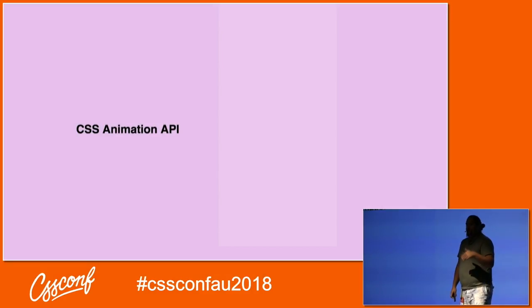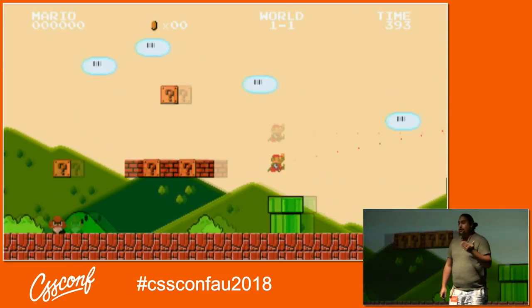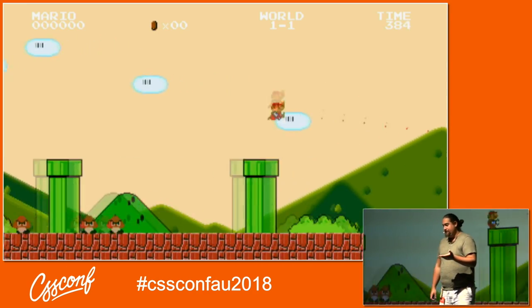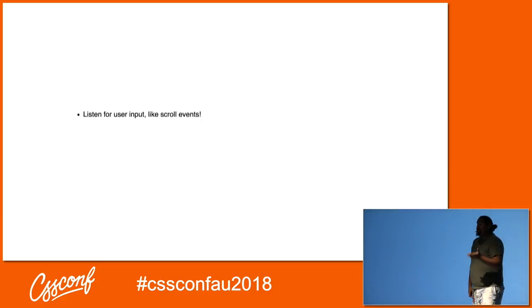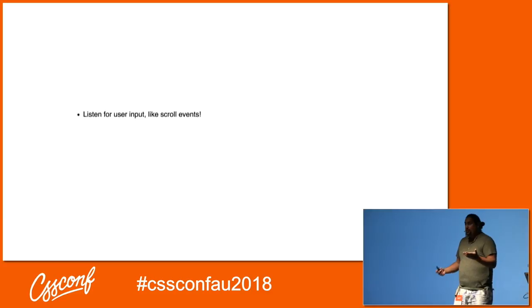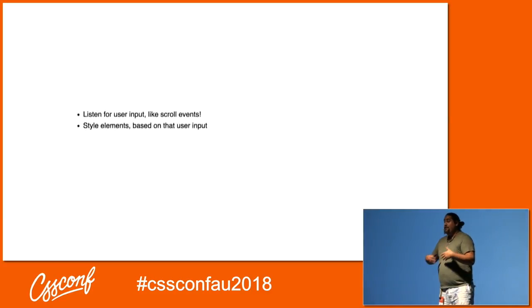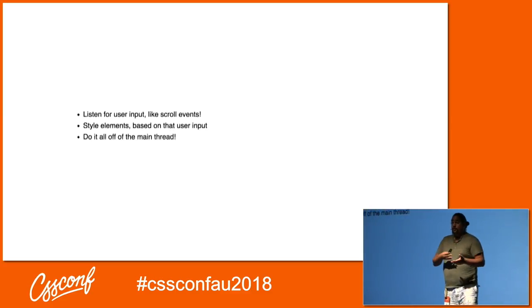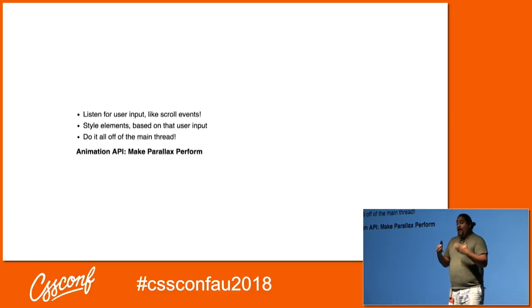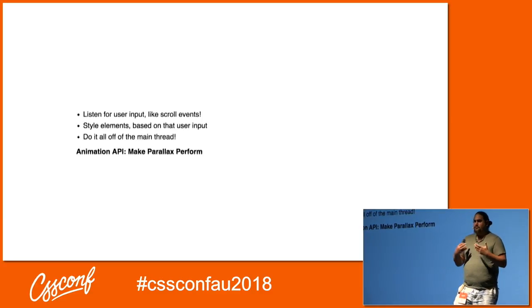The first is the CSS Animation API for Houdini — because I heard you really like parallax. What the CSS Animation API with Houdini does is let us listen for user input like scroll events and then style elements based on that input. We do it all off the main thread because it works in a worker. This API will actually let us make things like parallax perform well and not just be terrible for user experience.